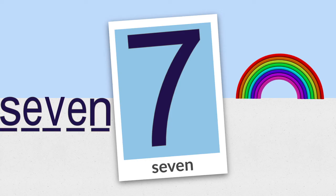There are two vowels in seven and they both say their short sound. Se-ven. That doesn't follow the two vowel rule, does it? One way to remember how to spell seven is to sing a little song: There is a number I can spell and seven is its name-o. S, e, v, e, n. S, e, v, e, n. S, e, v, e, n. And seven is its name-o.